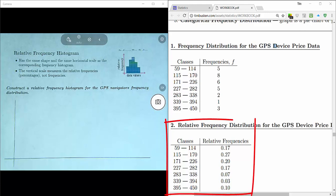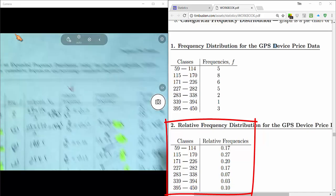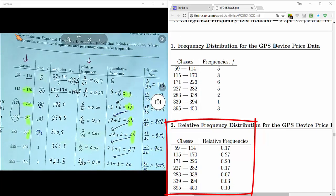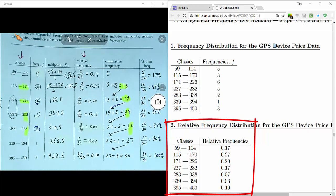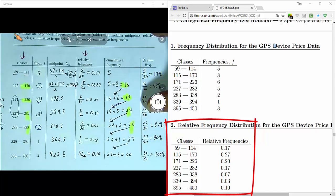Over here on the right we've got a relative frequency distribution for the GPS device price data. We made this relative frequency distribution from our expanded frequency distribution table. So what we did, just take this column, the classes column, and the relative frequency column and pair them together to make a table.